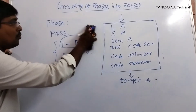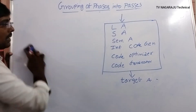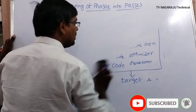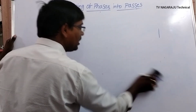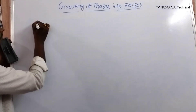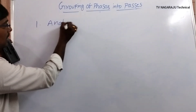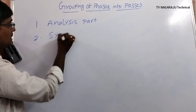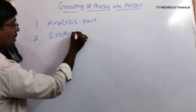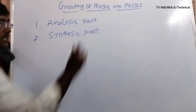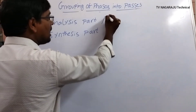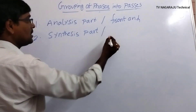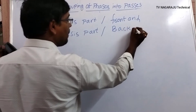Now we move to the two-pass compiler. In a two-pass compiler, the six phases are divided into two passes. The first part is called the analysis part, and the second one is called the synthesis part. The analysis part is also known as the front end, and the synthesis part is also known as the back end.